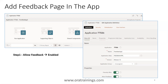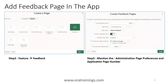Once the feedback feature is enabled, the next step is to create a page. The page type should be 'feature.' Create a page, select 'feature,' and then select 'feedback.' Once you select feedback, click on next, and you will see the next screen.